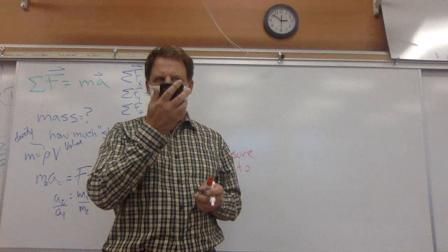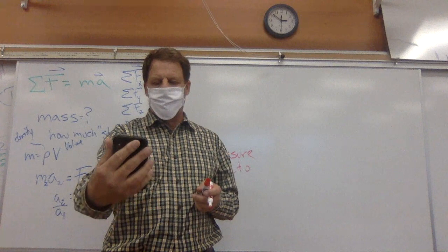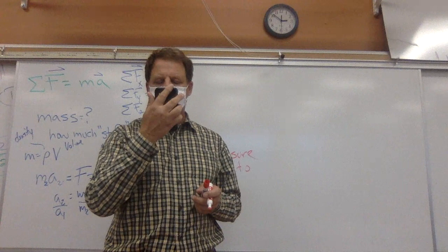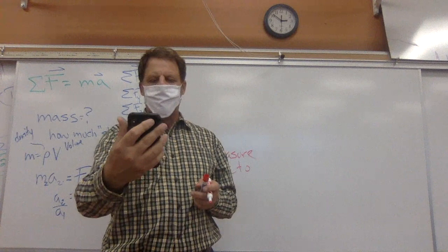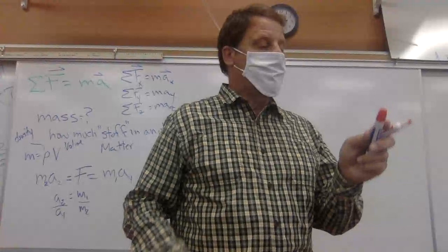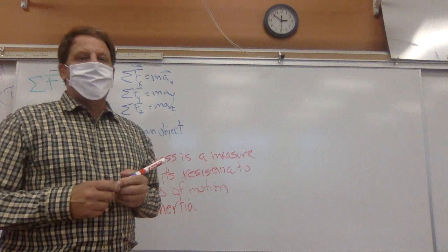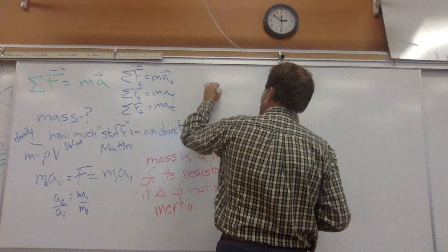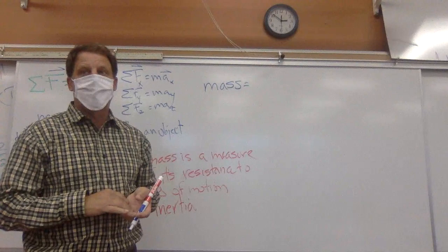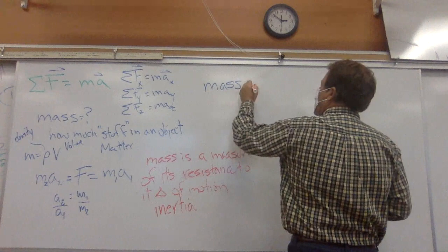Inertia is a measure of its resistance to its change in motion, so inertia is essentially the equivalent of mass. Here's a definition: inertia is the resistance of any physical object to any change in its velocity, including the change of an object's speed or direction of motion. Mass is both a property of a physical body and a measure of its resistance to acceleration when a net force is applied. So we can see they are certainly related.